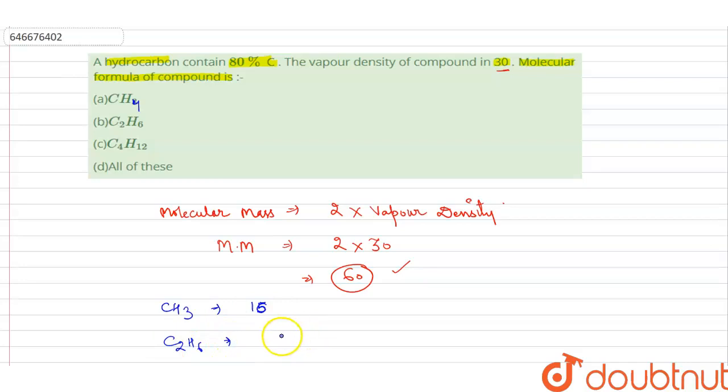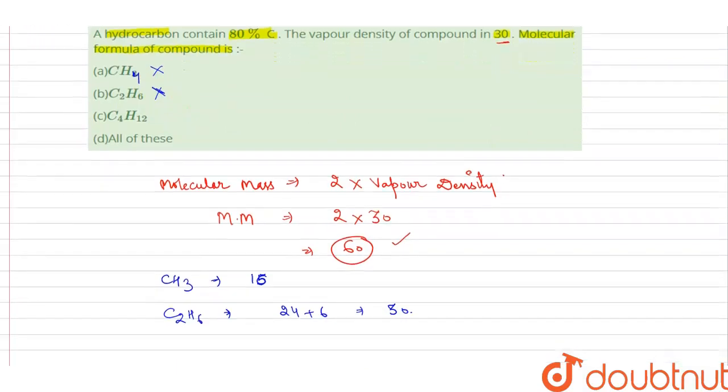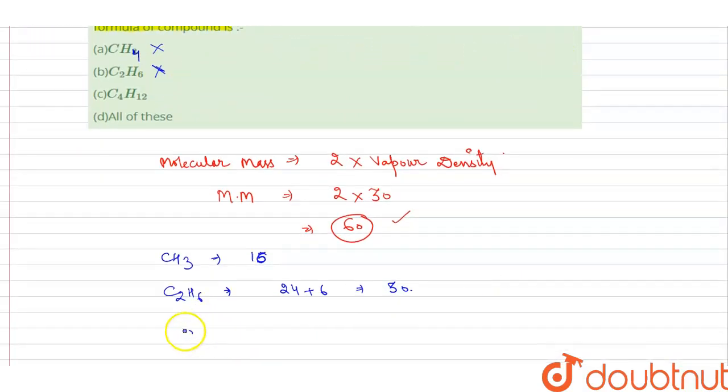C2H6: 12 plus 12 is 24, plus 6 gives 30. C2H6 has molecular mass 30, so this cannot be our hydrocarbon. Next, C4H12: 4 times 12 plus 12 times 1 equals 60.